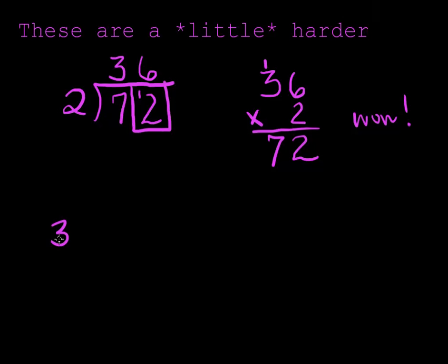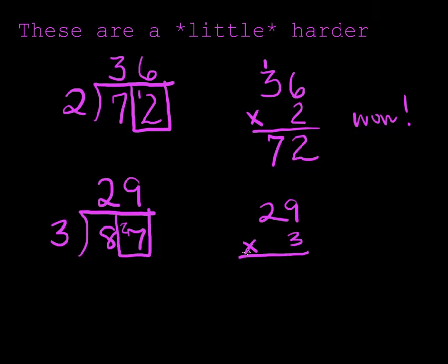That was pretty easy. Let's do another one. So 3 goes into 87. 3 goes into 8 two times, and there's a 2 left over. That makes the next number I have to divide 27. 3 goes into 27 nine times. So let's check: 29 times 3. 3 times 9 is 27. There's that 2, the same 2 that was left over. 2 times 3 is 6 plus 2 is 8. I think we might be getting the hang of this.